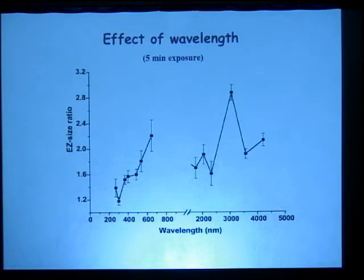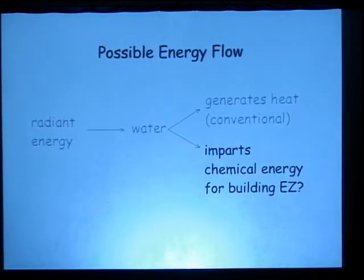A possible energy flow is something like this. We have radiant energy, incident radiant energy, particularly infrared energy, hits the water. Of course it generates some heat, although in our experiments not very much. It also imparts somehow, in a way that's not clear yet, some sort of chemical energy that is perhaps somehow responsible for building this exclusion zone. In ordinary experiments you can't get rid of the infrared, and so you have it around all the time. The fact that we see this without extra infrared doesn't necessarily mean that this is not the primary source of energy for this buildup.